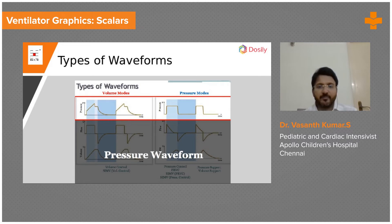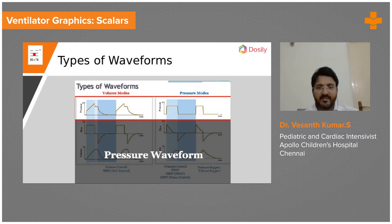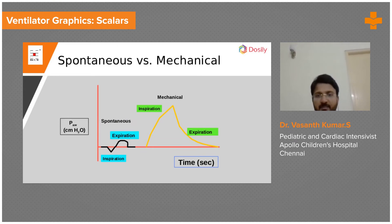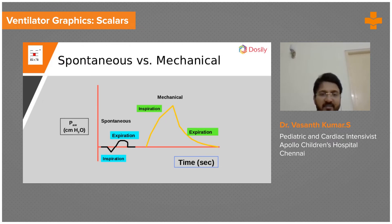Next is the pressure waveform. In pressure control mode, the pressure waveform appears as a square waveform because pressure is the constant variable. In volume control mode it looks different — it has a peak and a plateau. In controlled mode, breaths are always positive pressure breaths; spontaneous breathing is negative pressure. In inspiration you have a negative deflection, and in expiration a positive deflection.